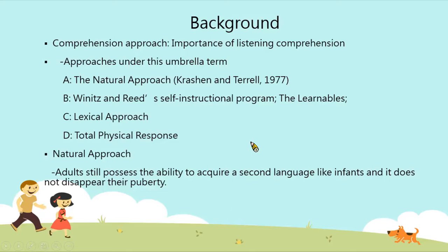Let's look at the natural approach. In the natural approach, researchers argue that adults still possess the ability to acquire a second language like infants, and it does not disappear in their puberty.